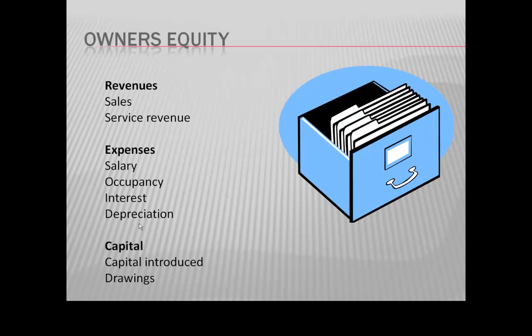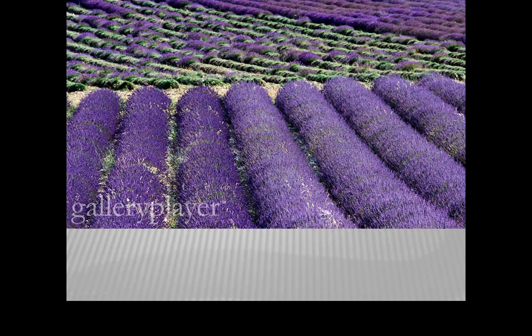Then there is owner's equity, which has two stages. There is the capital part — the money the owners put in or take out — and there is the equity the owners can build up by operating the business successfully. Revenues will increase equity and expenses will reduce equity.